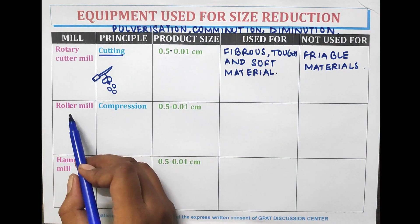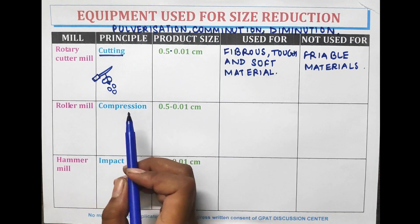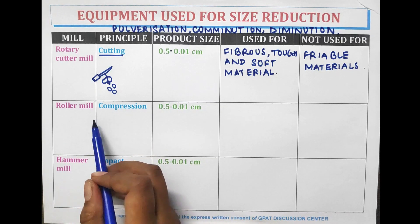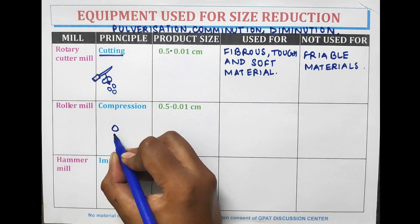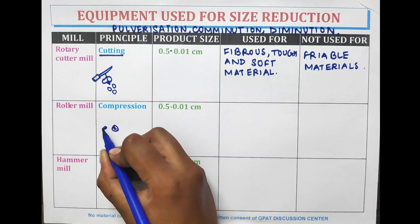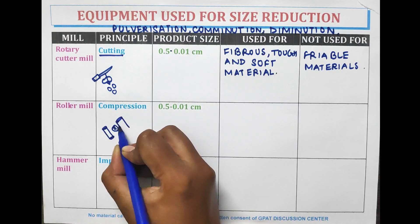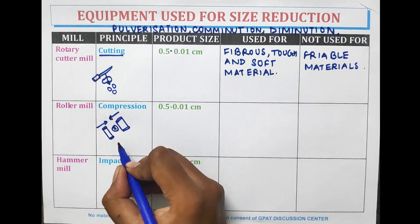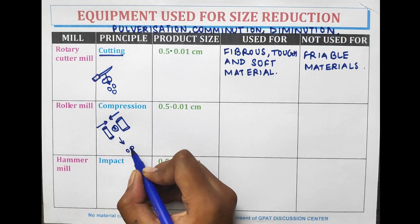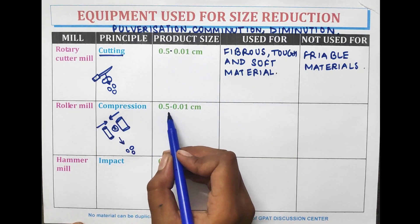Another equipment is the roller mill. The principle by which the roller mill works is compression. In compression, the material is crushed between the rollers with the help of pressure. The rollers apply pressure on the material to reduce its size. The product size is 0.1 to 0.01 cm.